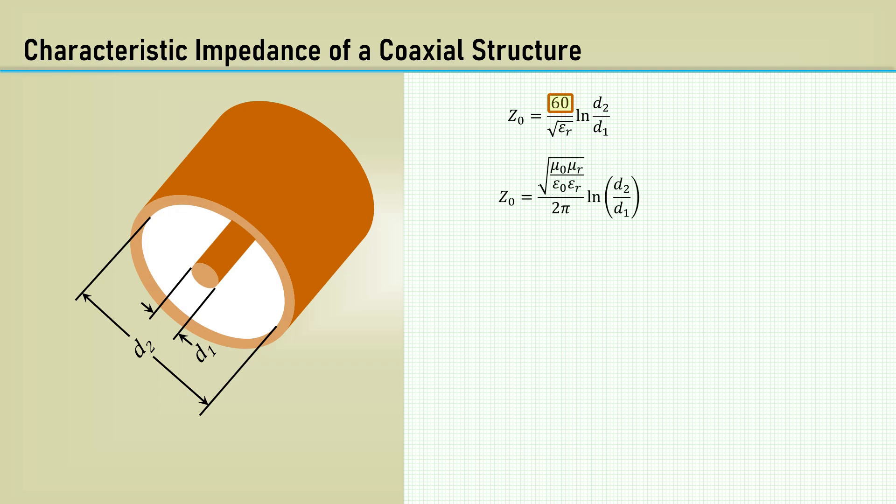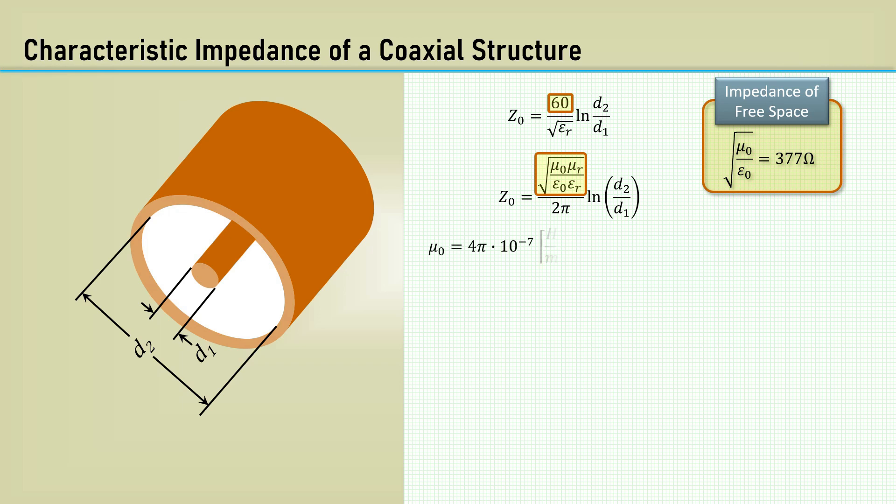Well, the real expanded formula for the characteristic impedance contains the square root of the permeability over the permittivity. It turns out that the square root of mu over epsilon is the impedance of free space, 377 ohms. Let's plug in those constants and see what we get. Mu naught is the permeability constant, 4 pi times 10 to the minus 7 henrys per meter. Since there are generally no magnetic forces involved in a coaxial structure, the relative permeability is 1.